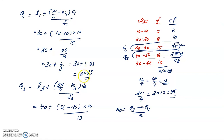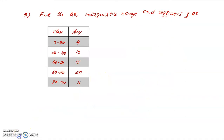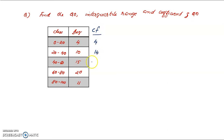Now, find the quartile deviation and coefficient of quartile deviation for the following data. The classes are 0–20, 20–40, 40–60, 60–80, and 80–100. The frequencies are 4, 10, 15, 20, and 11. We compute cumulative frequencies: 4, 14, 29, 49, 60. So capital N equals 60.